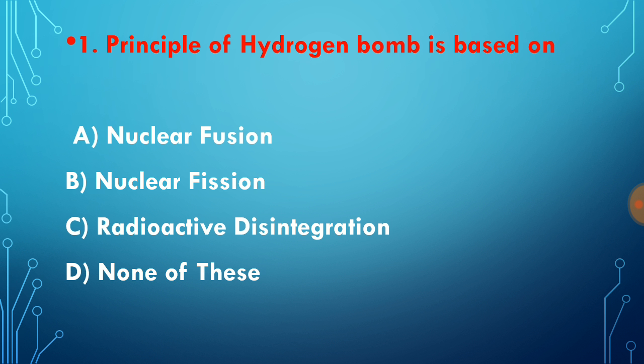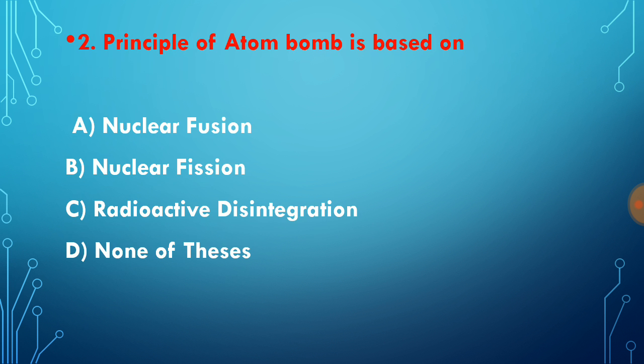We know that in hydrogen bomb, two hydrogen atoms fuse to give a heavy atom. Because of the hydrogen fusion, an enormous amount of energy is released. The fusion process means nuclear fusion. Because of nuclear fusion in hydrogen bomb, energy is released. Therefore, the principle of hydrogen bomb is nuclear fusion.